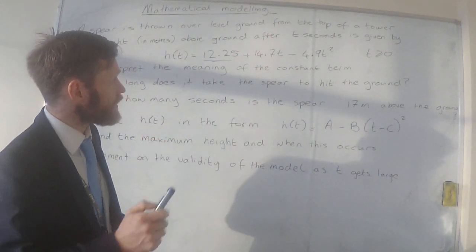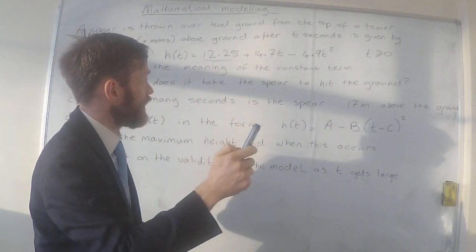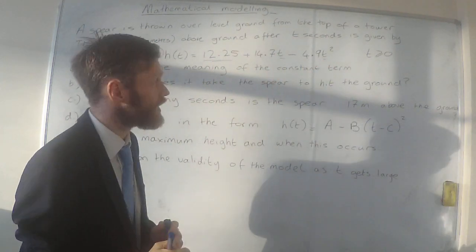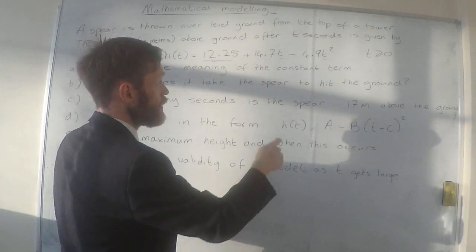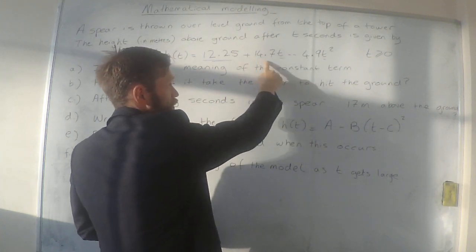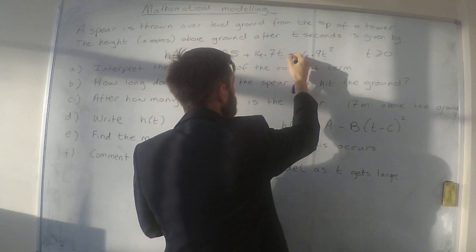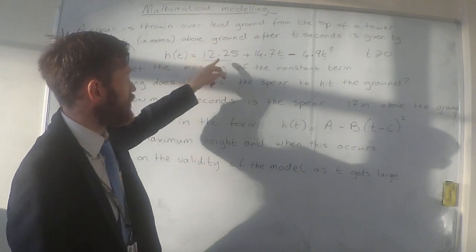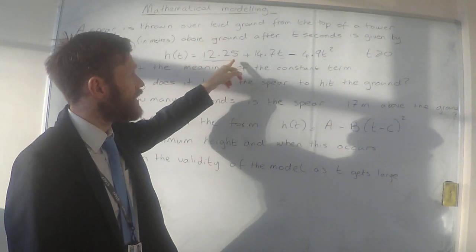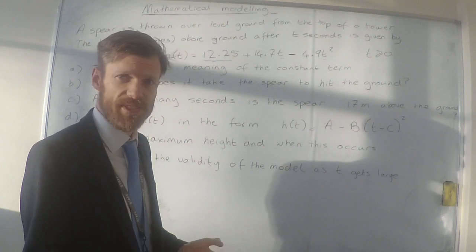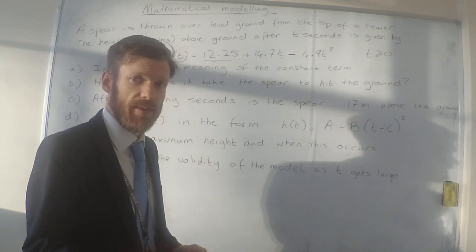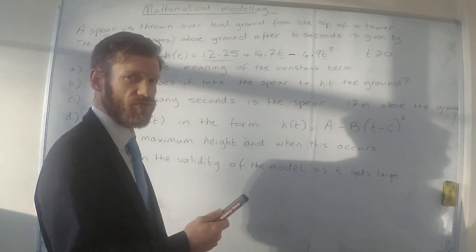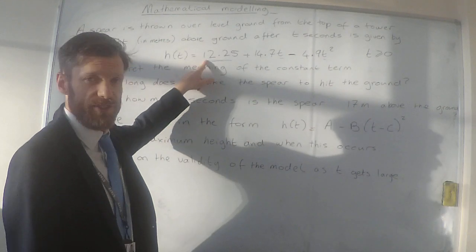Well, the 12.25 has special relevance because what that's referring to is when t is zero. Because when t is zero, that means that this term here will disappear, this term here will disappear, and that would just leave the height as being equal to 12.25. So in the context of this problem, what does that mean? When the time is zero, that's when the spear was thrown. So when the spear was thrown, it was at a height of 12.25.